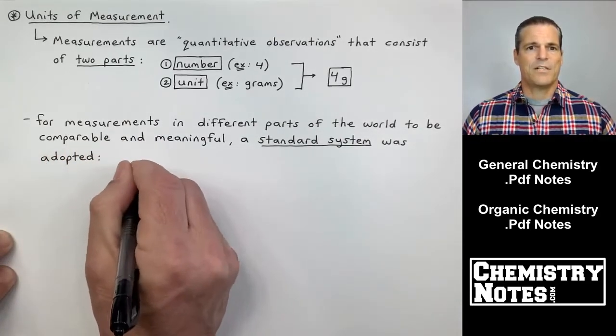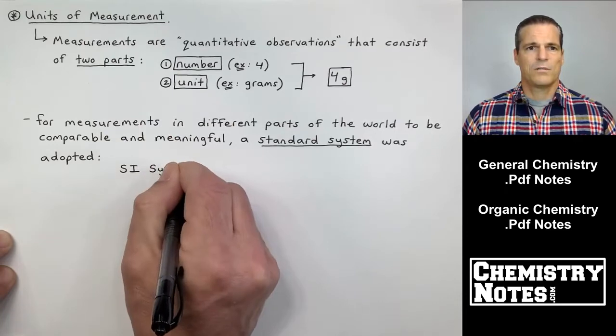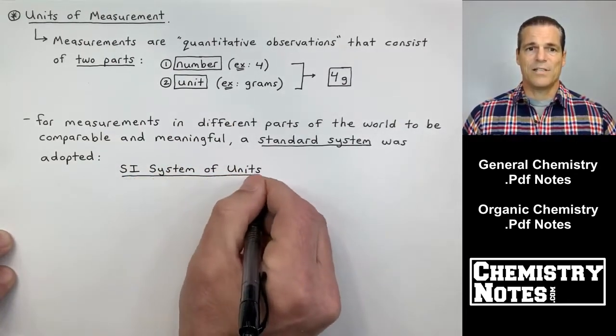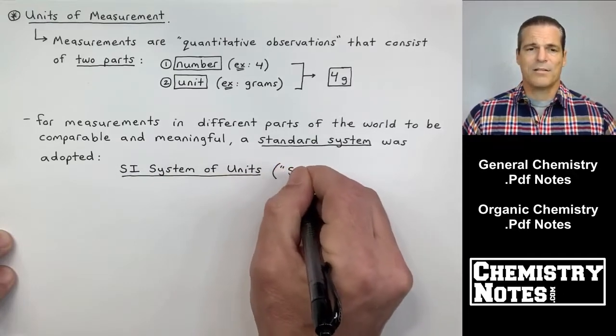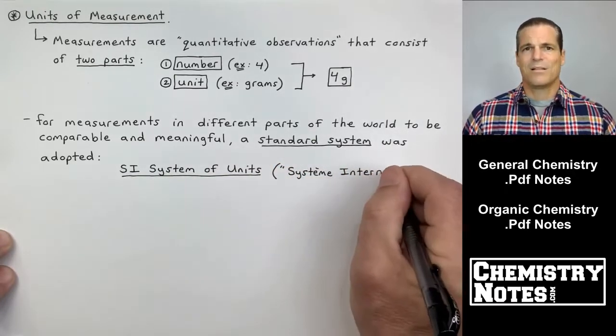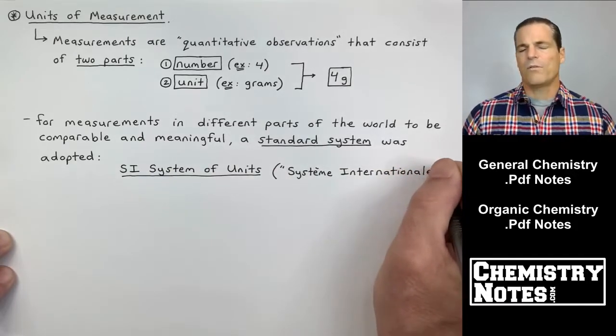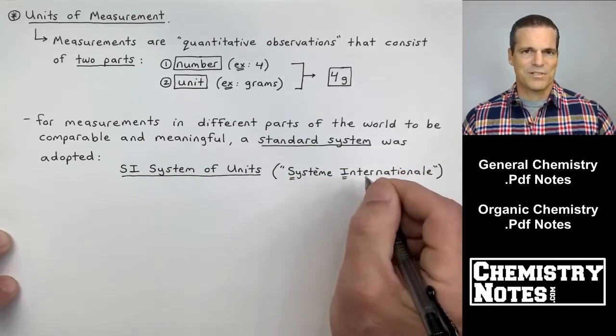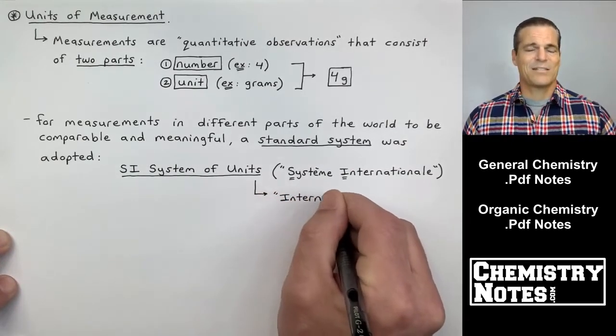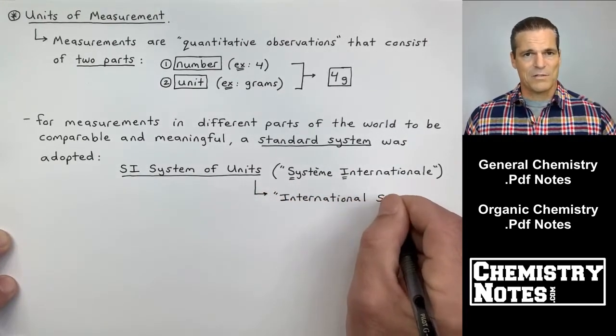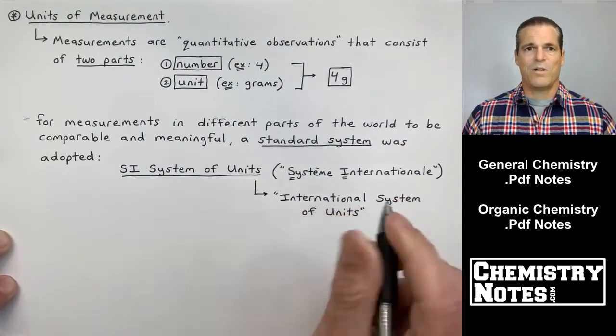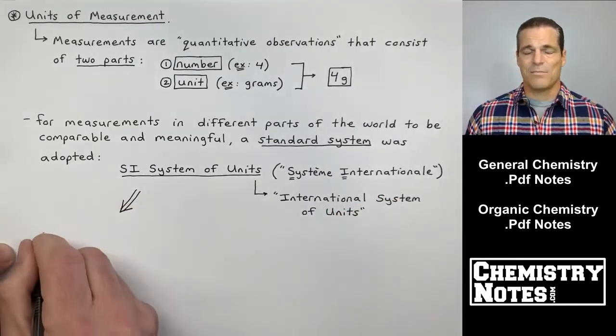For measurements in different parts of the world to be comparable and meaningful, a standard system has been adopted. Now this system is called the SI system of units. I've heard people say that the SI system is just the metric system today. And I've also heard some people say well, the SI system is very similar to the metric system with a few differences. And there's different points of view on this.